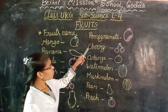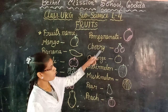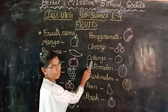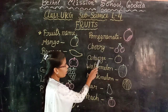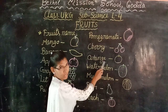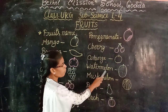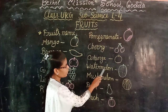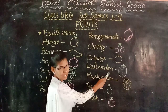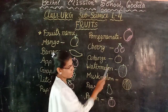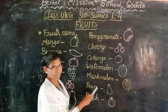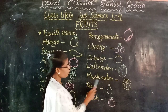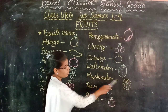Cherry — C-H-E-R-R-Y. It is red in color. Orange — O-R-A-N-G-E. It is yellow in color. Watermelon — W-A-T-E-R-M-E-L-O-N. It is green in color. Muskmelon — M-U-S-K-M-E-L-O-N. It is yellow in color.